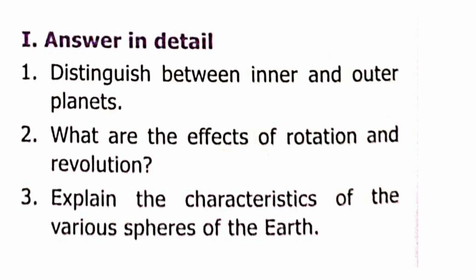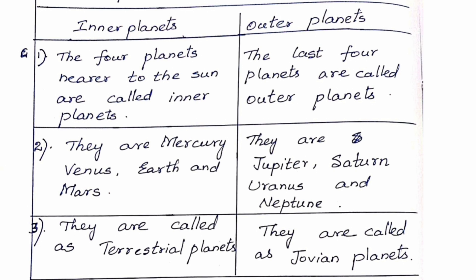Section I: Answer in Detail. Question 1: Distinguish between inner and outer planets. Inner planets are the four planets nearer to the Sun: Mercury, Venus, Earth, and Mars — also called terrestrial planets. Outer planets are the last four planets: Jupiter, Saturn, Uranus, and Neptune — also called Jovian planets.